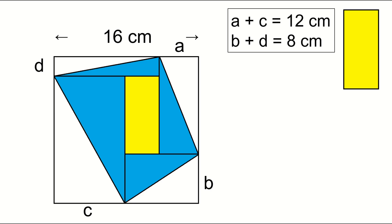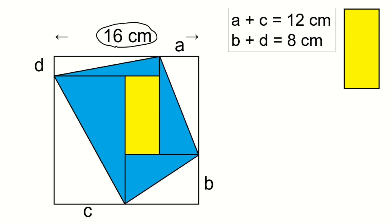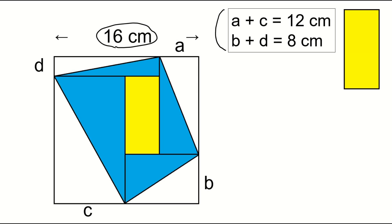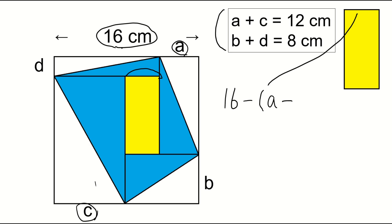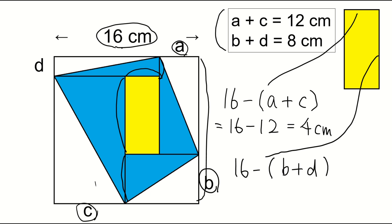Let us now recall the first condition. It is a square with each side 16 centimeters. A plus C equals 12 centimeters. B plus D equals 8 centimeters. The length of the top side of the rectangle is: 16 minus (A plus C) equals 16 minus 12, equals 4 centimeters. The length of the side of the rectangle is: 16 minus (B plus D) equals 16 minus 8, equals 8 centimeters.